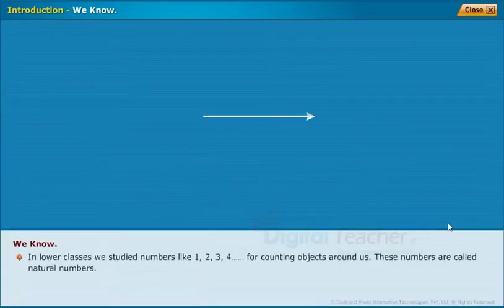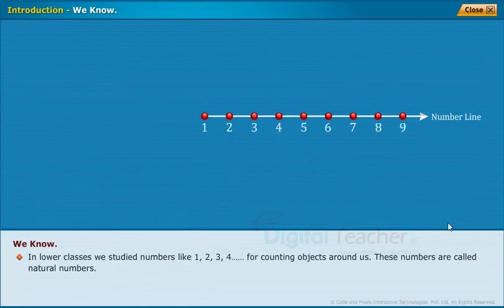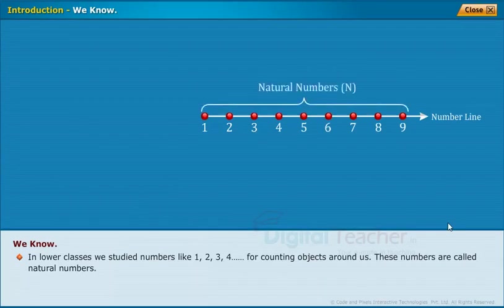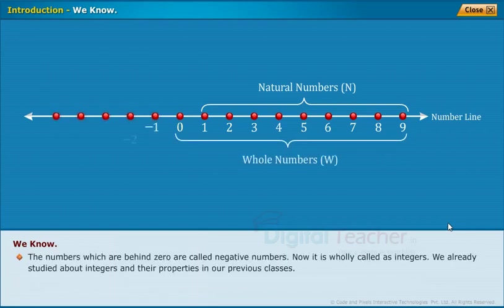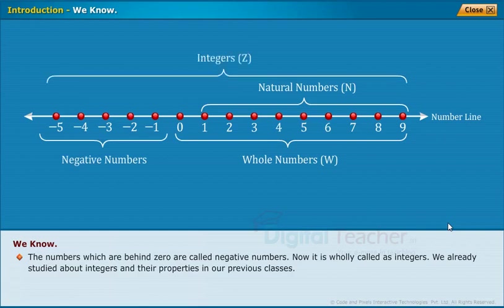We know that in lower classes, we studied numbers like 1, 2, 3, 4, and so on for counting objects around us. These numbers are called natural numbers. If we add 0 on the number line, we get a new collection of numbers called whole numbers. The numbers which are behind 0 are called negative numbers, and together this collection is called integers. We already studied about integers and their properties in our previous classes.